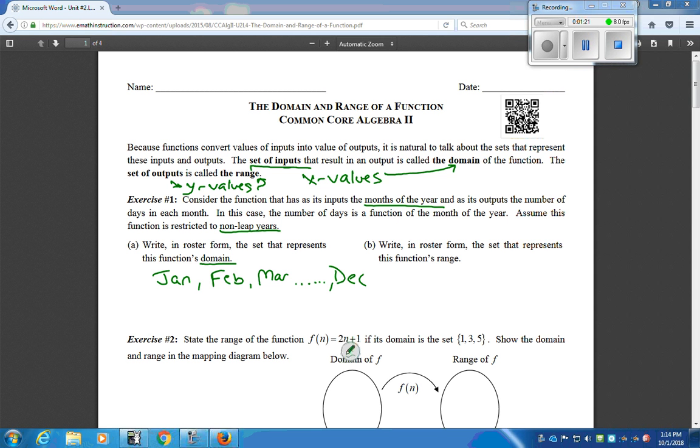And then the range is the days of the month. So, for the range, it's just going to be 28, 30, and 31. So, this is a function because each month only has one amount of days. January, for example, has 31. February, 28. So, that's how you would do a roster form. You just kind of list them out. And you want to list all of them.